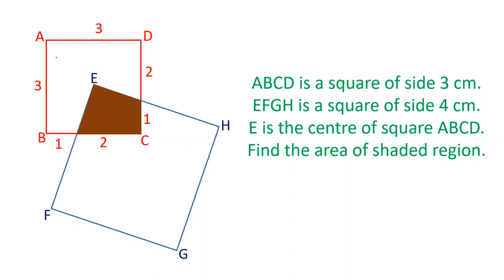There is a square ABCD of side 3 cm each. There is another square drawn from the center of ABCD, which is EFGH of side 4 cm. It is drawn in such a way that BC is intersected at a point which divides it in the ratio of 1 to 2. Similarly, CD is also divided in the ratio of 1 to 2.